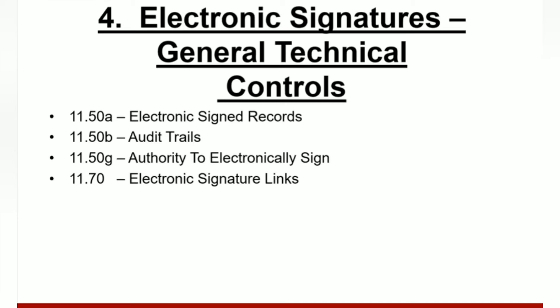For 11.50B, the system must allow only the original signer to delete the electronic signature, and a system-generated audit trail must be created whenever a signature is deleted. The full name of the signer, date stamp, time stamp, and meaning of the signature must appear in every human-readable form of the electronic record for all screens and printed reports. The system must verify that an individual has the authority to electronically sign a record before allowing them to do so. For 11.70B, electronic signatures must be automatically linked via the computer system to their corresponding electronic records to ensure the signature cannot be excised, copied, or otherwise transferred to falsify an electronic record. Electronic signatures and signature links must be maintained for as long as the record to which the signature applies exists.